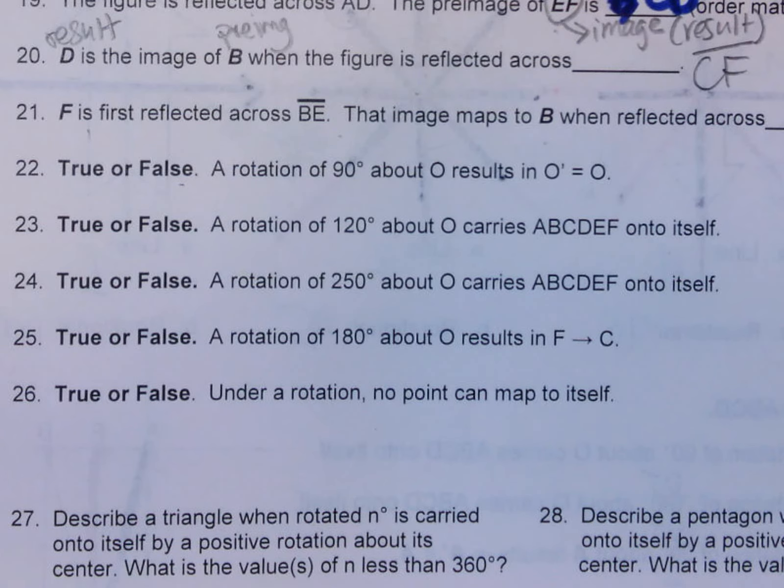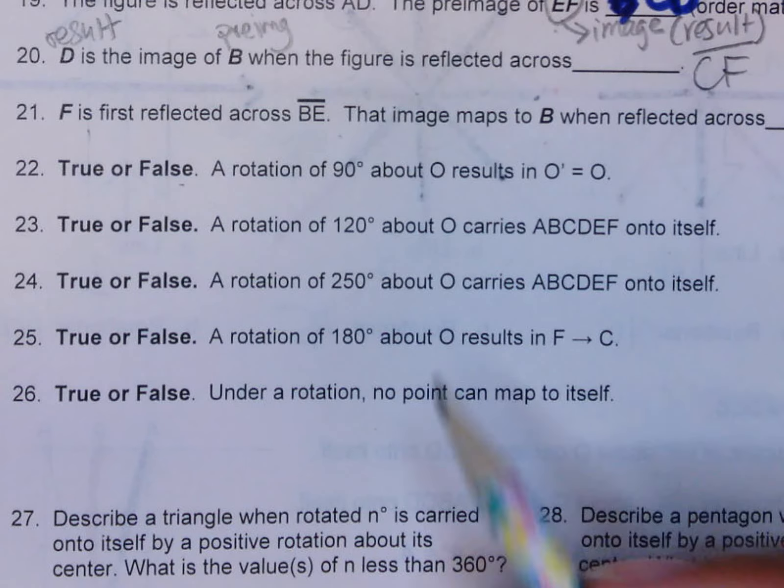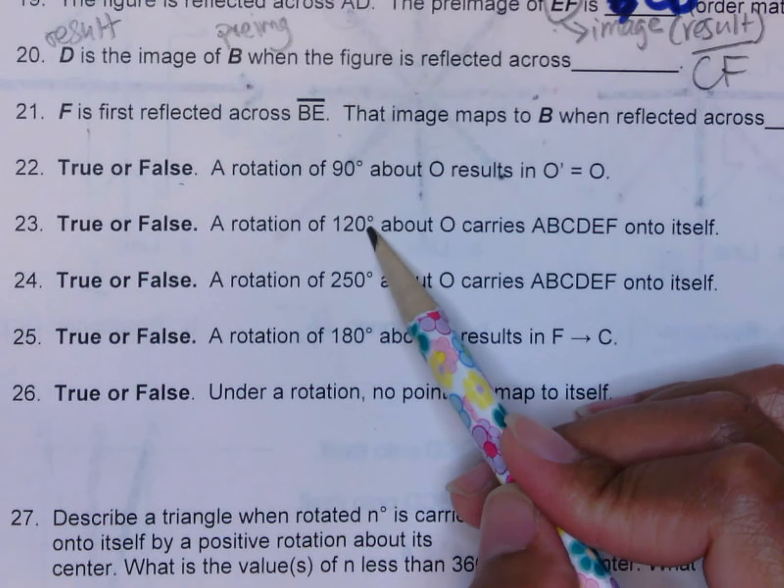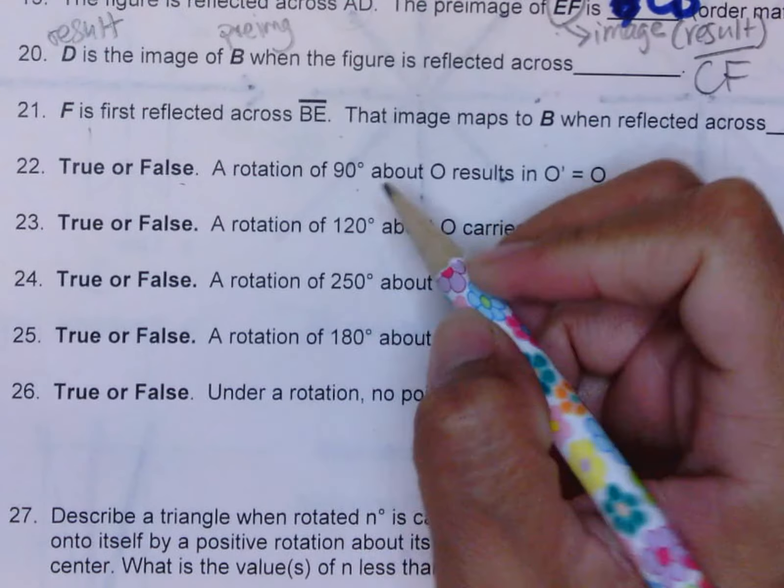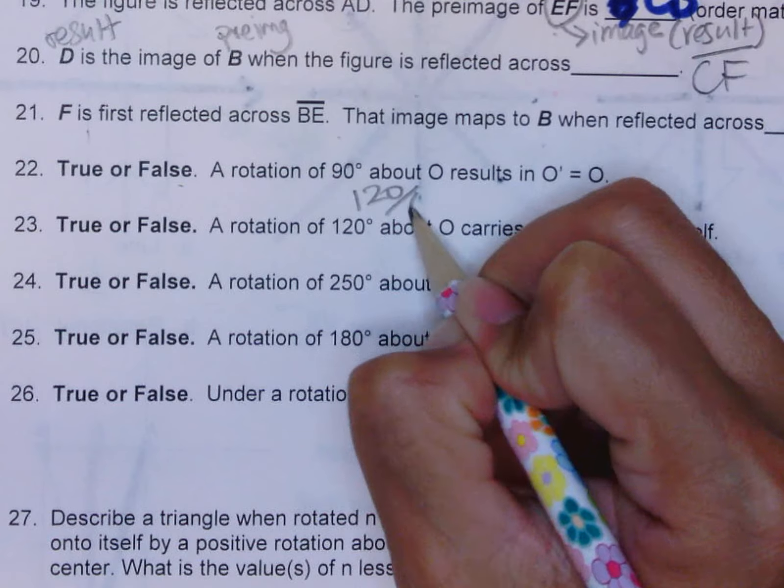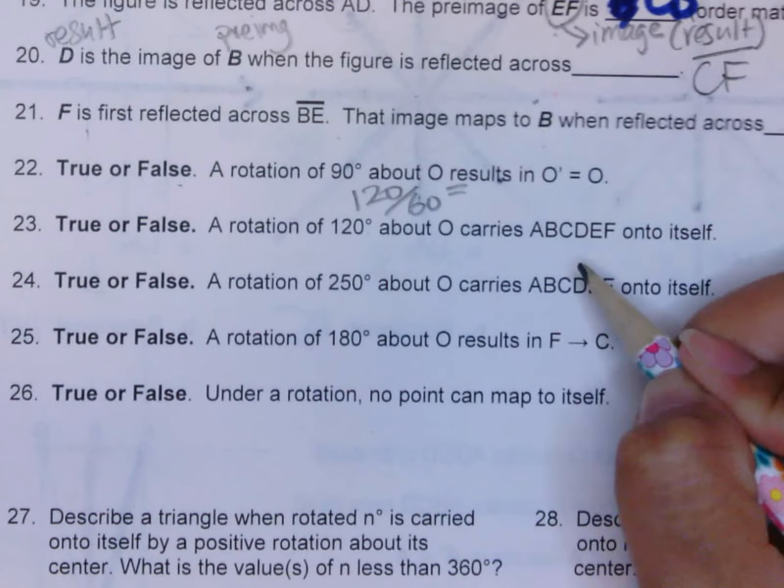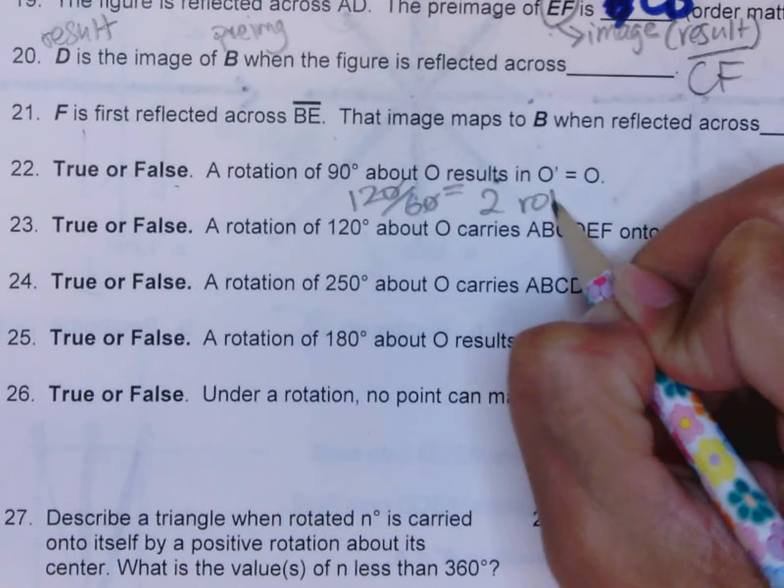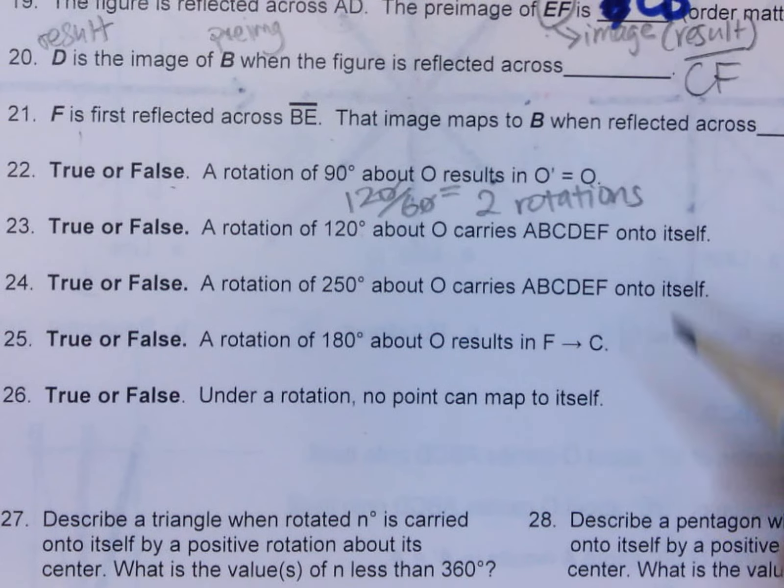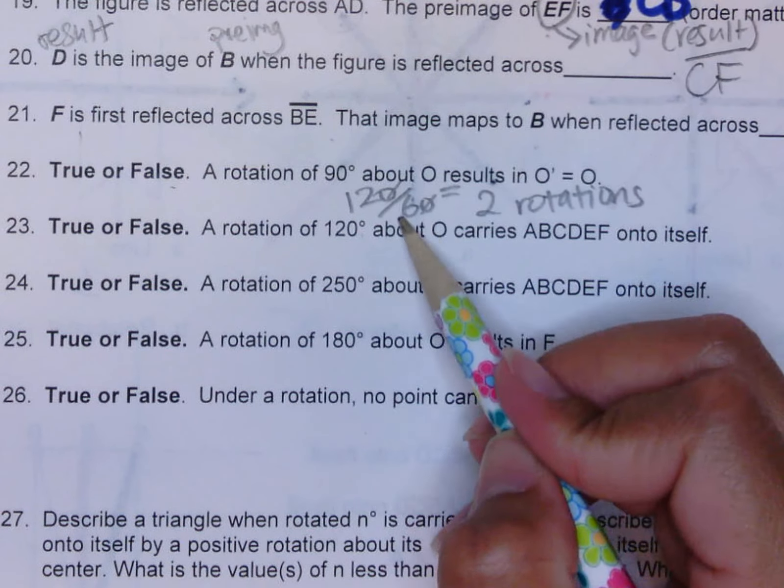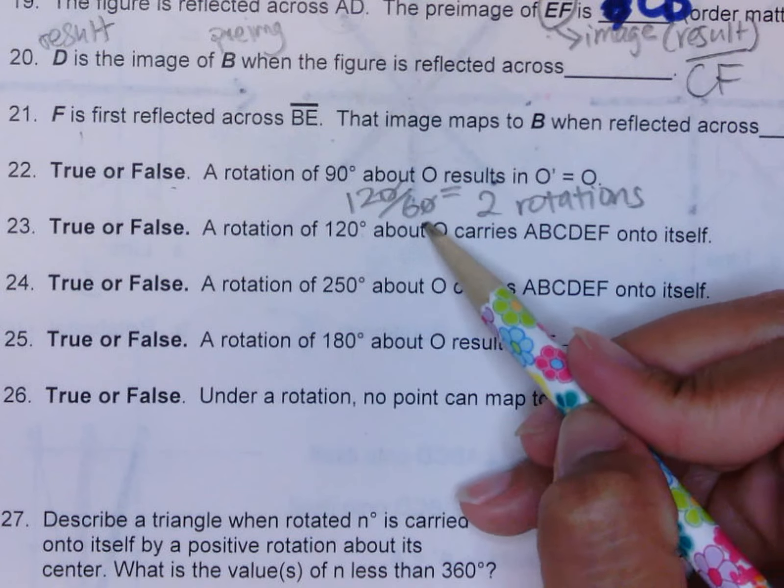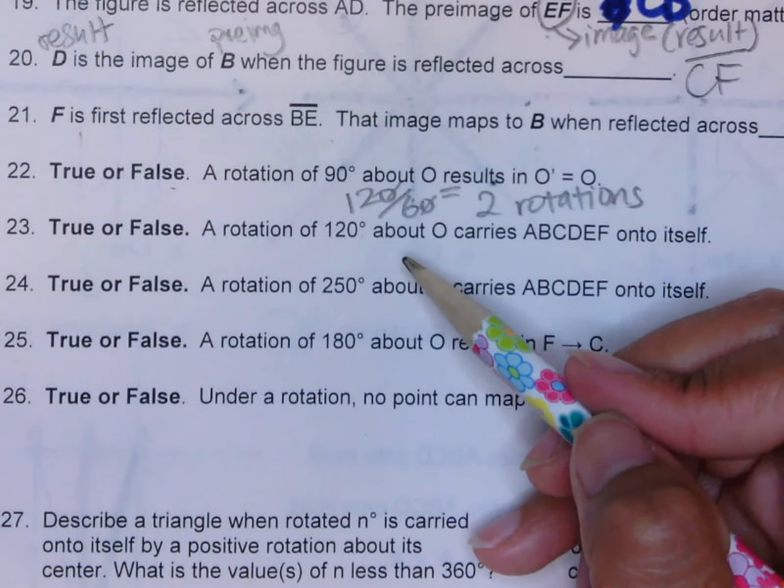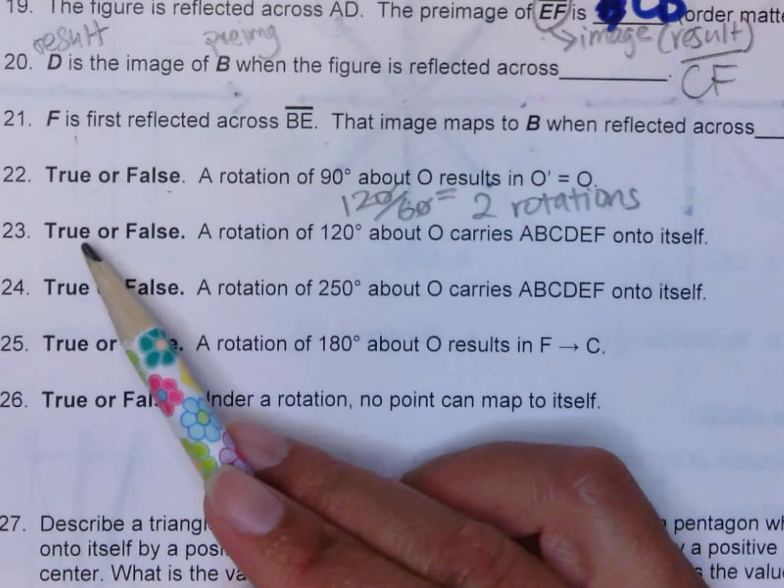The next one. A rotation of 120 degrees carries the hexagon onto itself. 120 is a multiple of 60, so let's just do a multiple of 60. How many 60s would go into 120 so that the hexagon would map onto itself? You cancel this one, so that would be two rotations. Remember, you have to have whole numbers in order to get a good rotation, because you can't have a 2.5 rotation, that's not going to get you to your image. So that would be true for number 23.